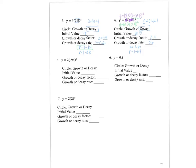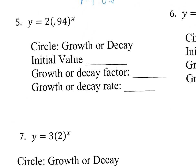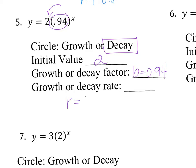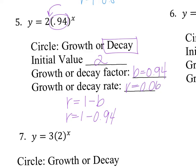Let's try number 5: y equals 2 times 0.94 to the x power. Is it growth or decay? 0.94 is actually between 0 and 1, so it is decay. My initial value is whatever number comes first, which is 2. The decay factor is just what b equals, which is 0.94. And because it's decay, my rate equals 1 minus b, so r equals 1 minus 0.94, which equals 0.06. And that is my rate.